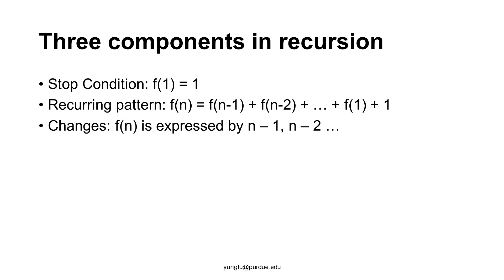Let's review the three components of recursion. The stop condition is when N is 1: f(1) is 1. The recurring pattern is that f(N) is the sum of f(N−1), f(N−2), down to f(1), plus 1. The change is that f(N) is expressed using N−1, N−2, smaller and smaller values.